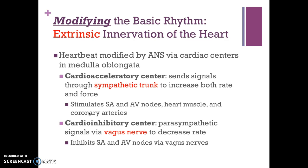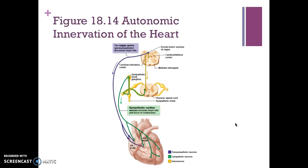The cardioacceleratory center sends signals through the sympathetic trunk to increase both rate and force. It stimulates the SA and the AV nodes, heart muscle, and coronary arteries. The cardio-inhibitory center sends parasympathetic signals via the vagus nerve to decrease the rate, inhibiting the SA and AV nodes.